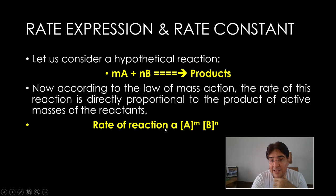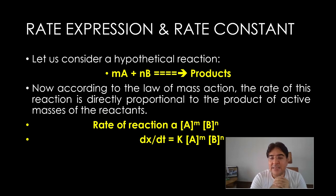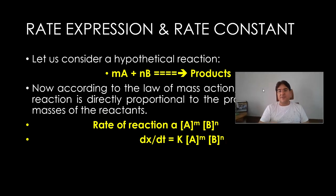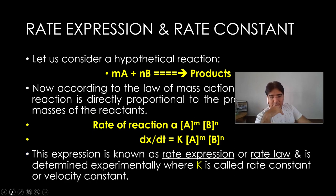Now to change the proportionality sign into equals to, we give a constant. Here, keep in mind that dx/dt is how we express the rate. dx/dt is the rate of reaction. K is the rate constant. A to the power m is the active mass of A reactant, and B to the power n is the active mass of B reactant. So it's very simple. Now what is this equation called? It's called rate expression or rate law. This equation dx/dt equals K times A to the power m times B to the power n is known as the rate expression or the rate law.